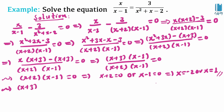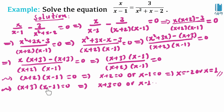Factorizing the numerator x squared plus 2x minus 3 gives x plus 3 times x minus 1. Setting x plus 3 equal to zero gives x equals negative 3, and x minus 1 equal to zero gives x equals 1.